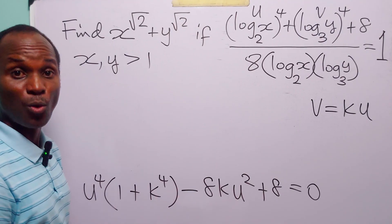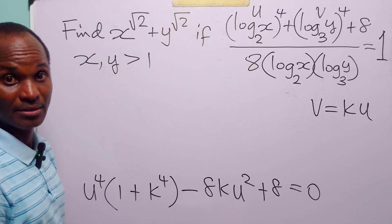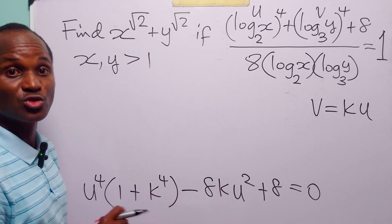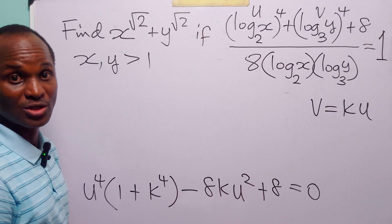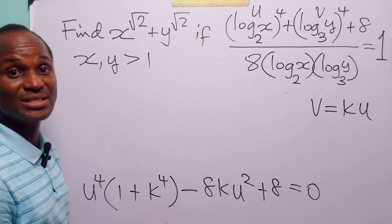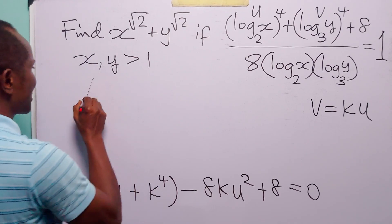From here, we have u to the power 4 plus k to the power 4 times u to the power 4, minus 8ku squared plus 8, equals 0. Factorizing u to the power 4 from the first two terms, we get u to the power 4 times 1 plus k to the power 4, minus 8ku squared plus 8 equals 0. Notice that this is a quadratic equation in u squared.